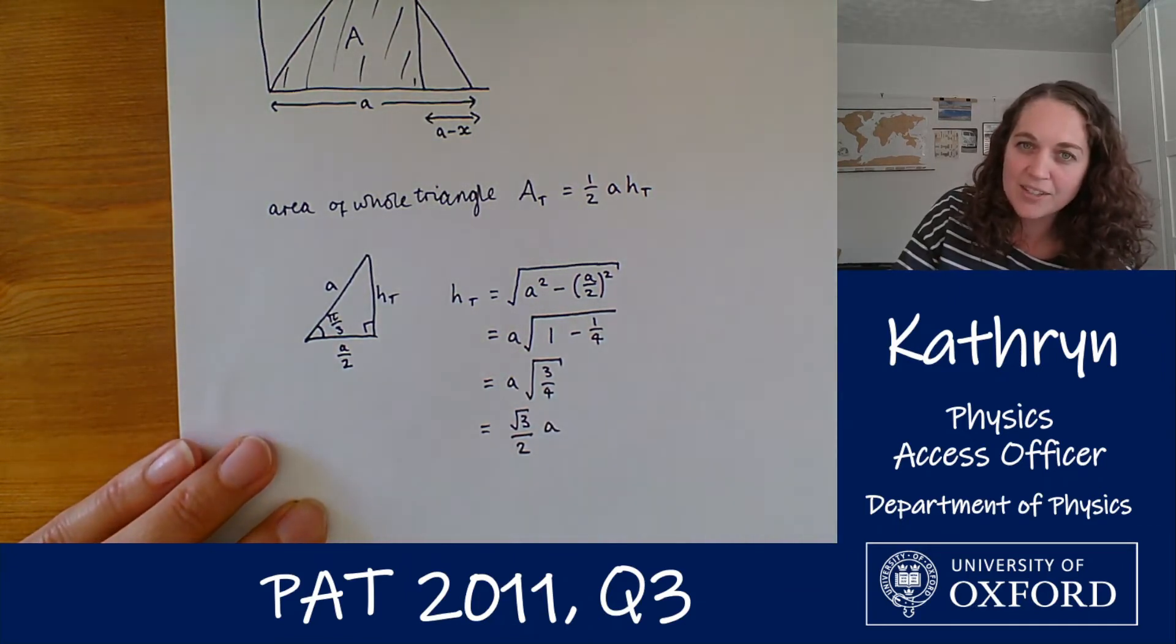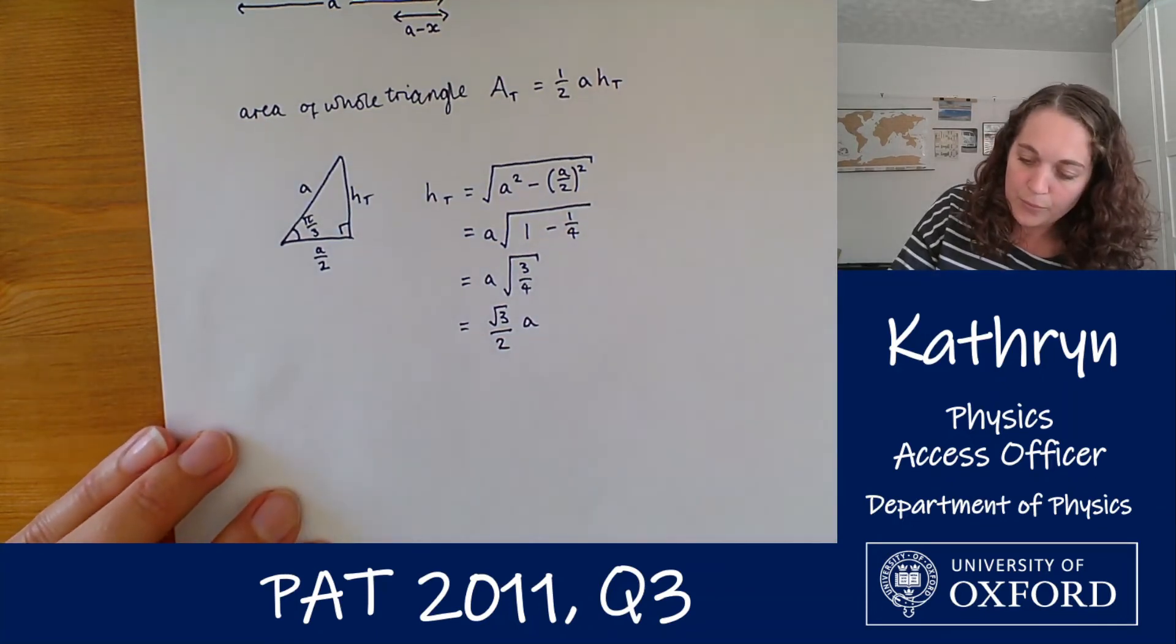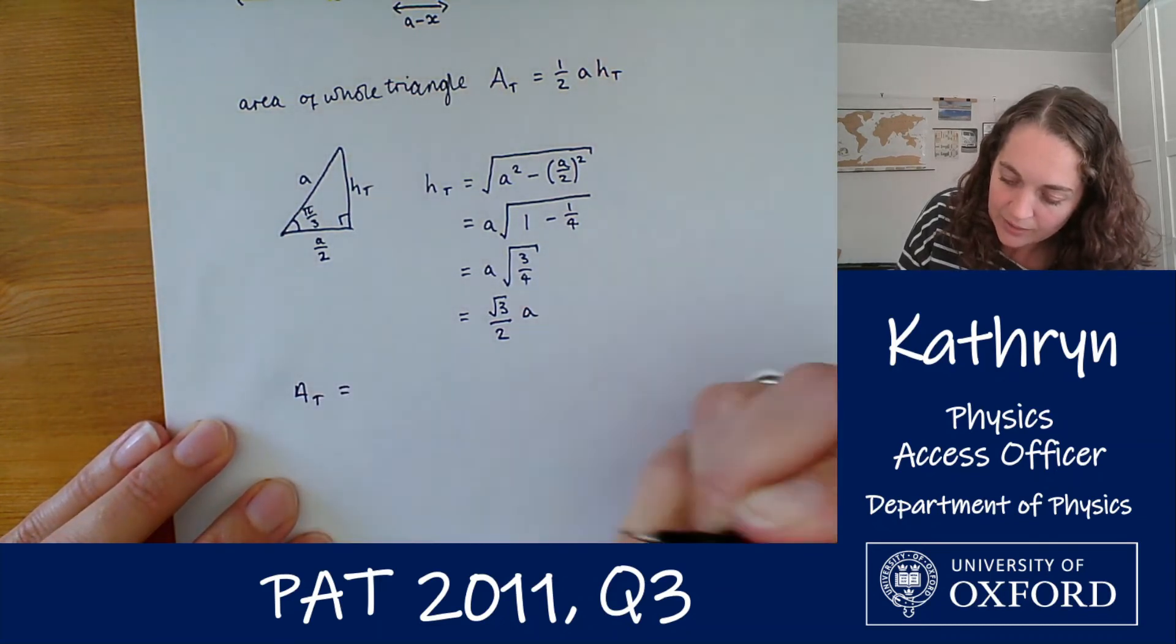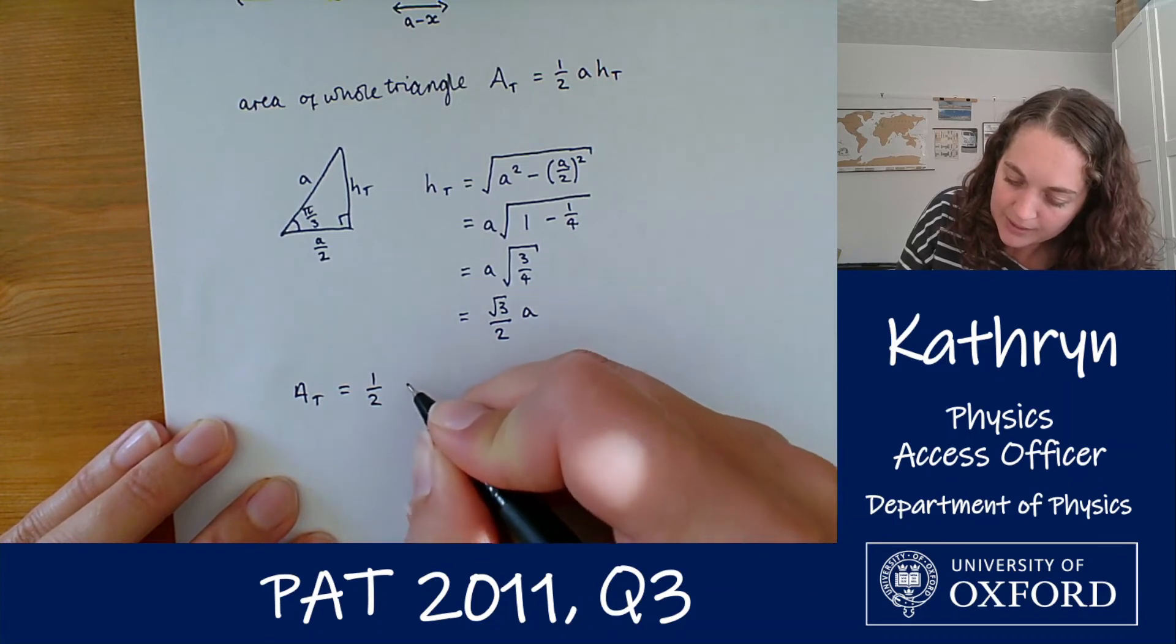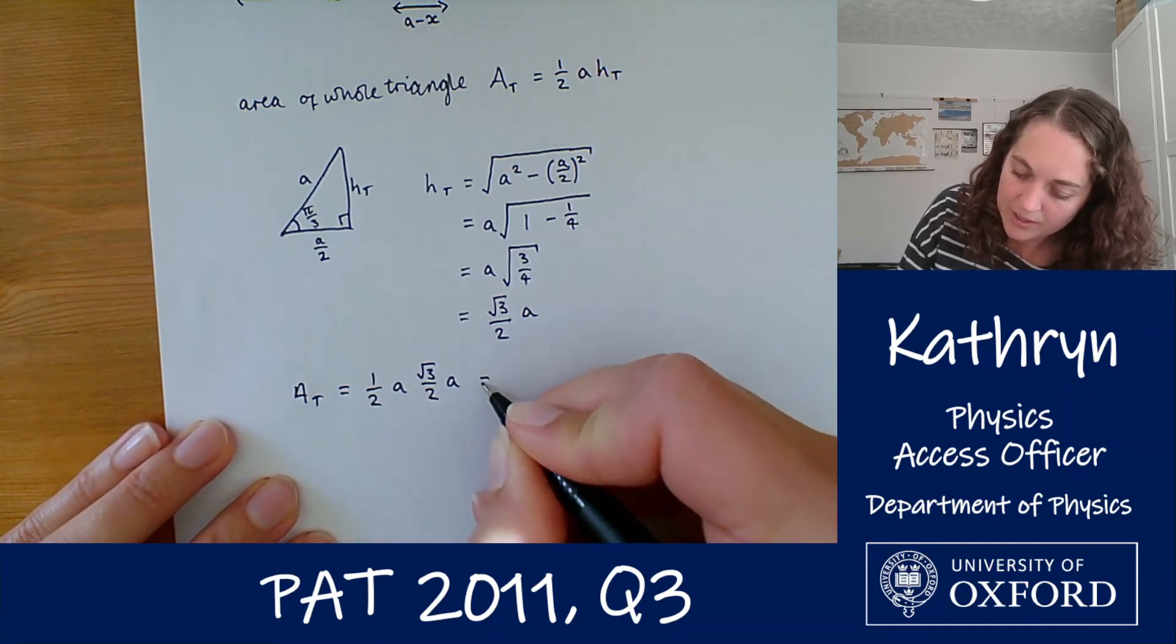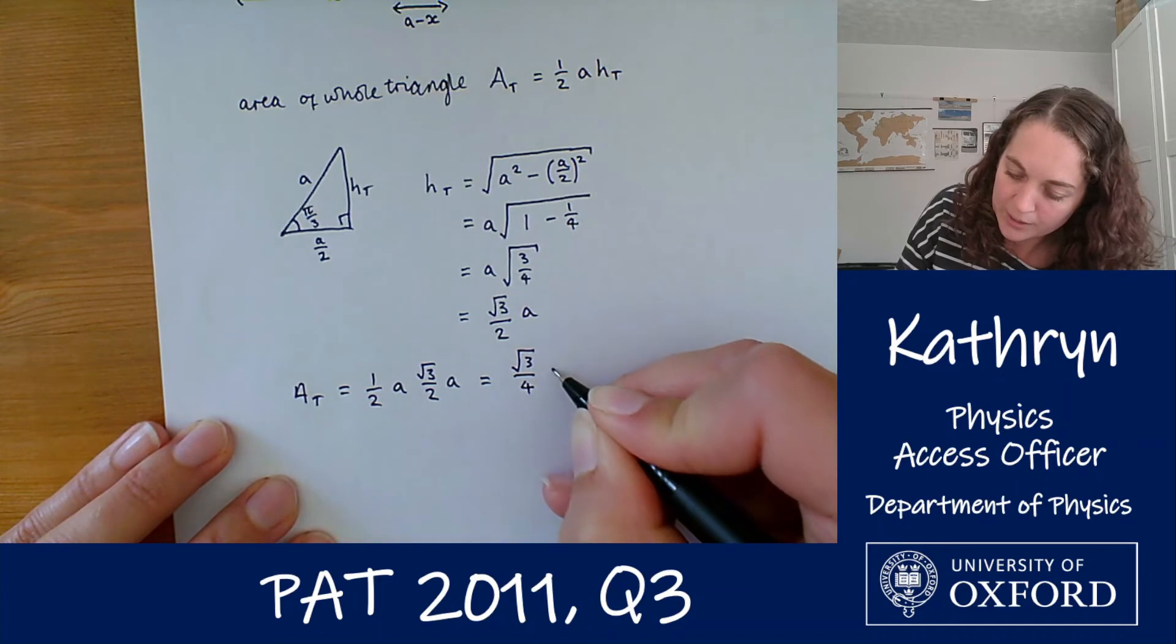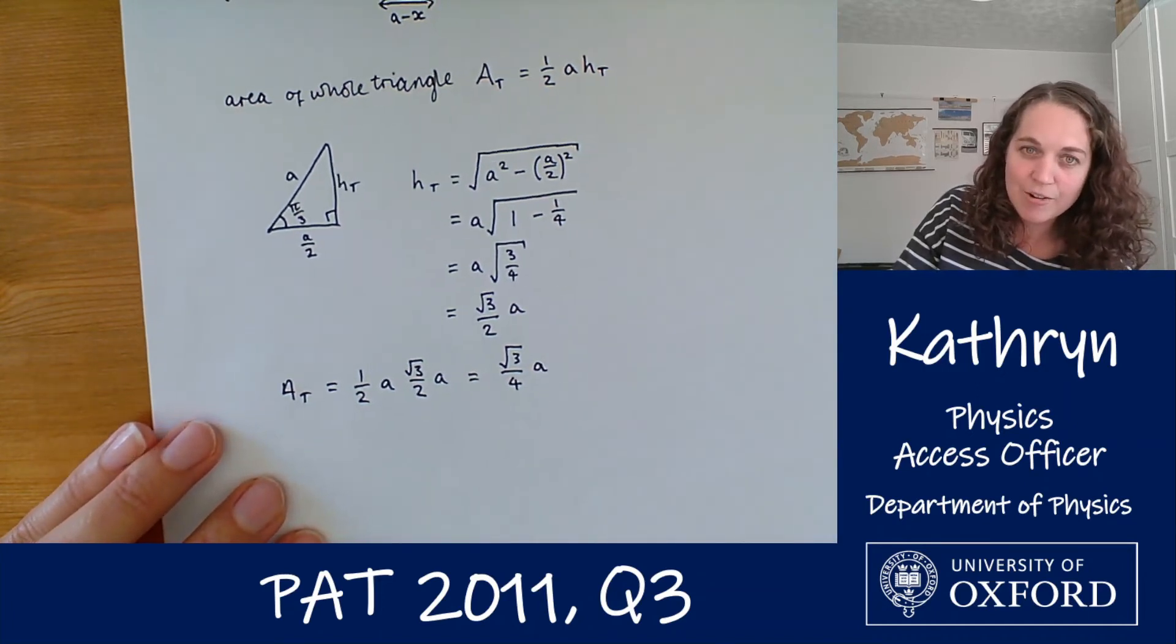So that's the height of our whole triangle. So that means that the area of our whole triangle A_t is going to be a half times a times root 3 over 2 times a. And tidying that up a bit gives us root 3 over 4 times a squared. Alright, so that's the area of our whole triangle.